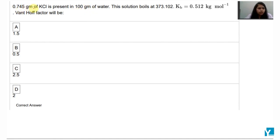0.745 gm of KCl is present in 100 gm of water. This solution boils at 373.102 K given. We want to calculate Van't Hoff factor i.